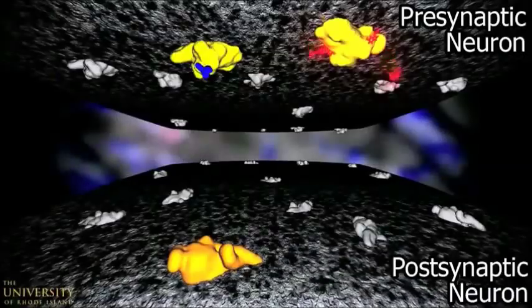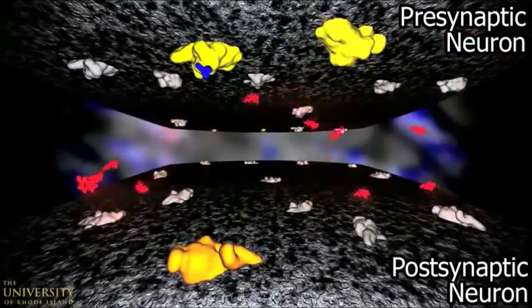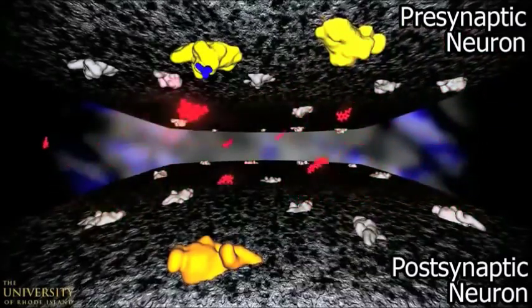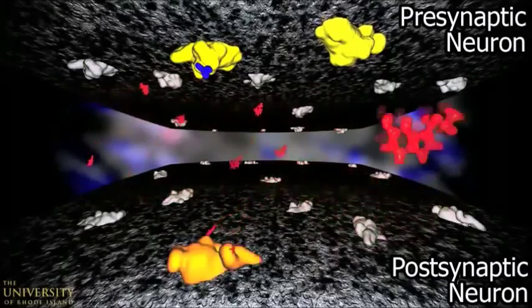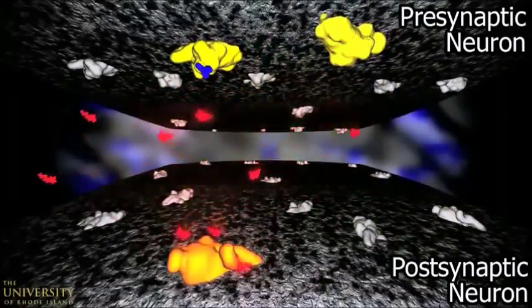If serotonin is denied entry to the reuptake protein, it must either float in synaptic space or interact more with the postsynaptic serotonin receptor. The more time serotonin molecules spend in these states, the more significant Prozac's antidepressant effects.